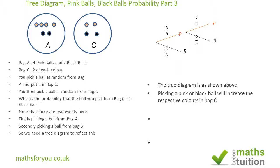Note that 3 over 5 plus 2 over 5 equals 1. Now if you picked a black ball from Bag A and put it into Bag C, the number of pink balls in Bag C stays at 2, so the probability of picking a pink ball from Bag C is 2 over 5. The number of black balls increases by 1, so the probability of picking a black ball from Bag C is 3 over 5. Note that 2 over 5 plus 3 over 5 equals 1.